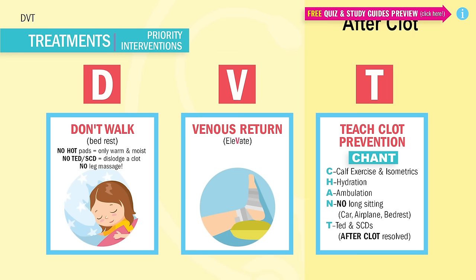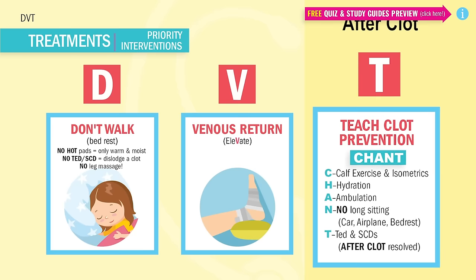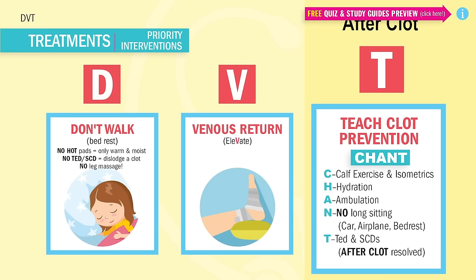Okay, now after the clot is resolved, we use T for teaching DVT prevention. Remember the acronym CHAT. C is for calf exercises to move that blood around and prevent stasis. H is for hydration — remember drinking eight glasses of water per day. Fluid helps make the blood less thick, making it easier for blood to move around the body. A is for ambulation, so moving that blood around — walking is always the best way.